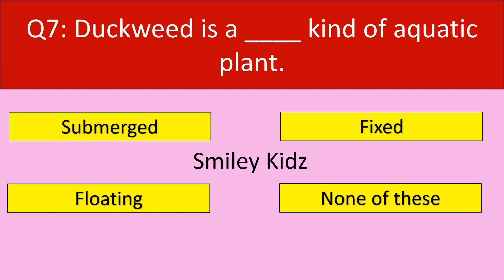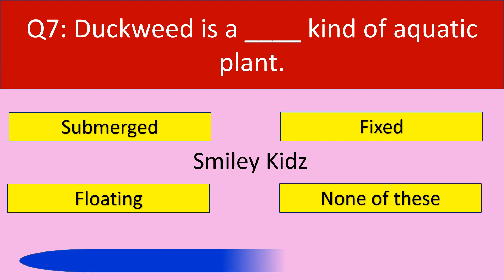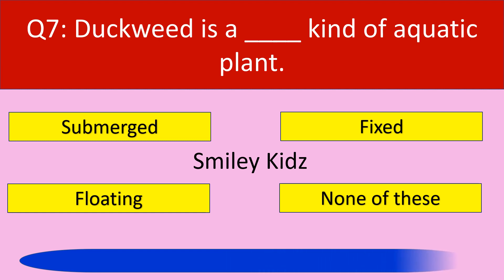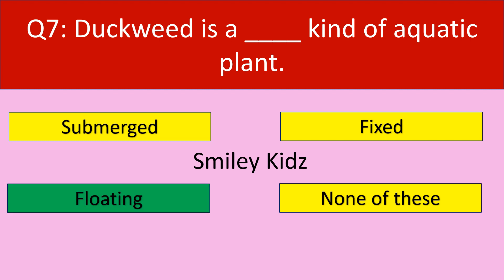Question number 7. Aquatic weed is a what kind of aquatic plant? Options are: submerged, fixed, floating, none of these. Your time starts now. Your time is up. The correct answer is floating. Aquatic weed is a floating kind of aquatic plant.